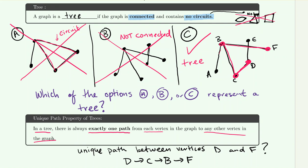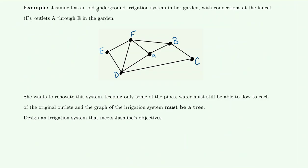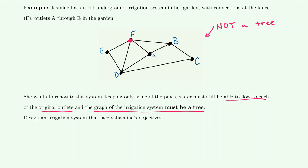In this example, Jasmine has an old underground irrigation system in her garden, with connections at the faucet F and outlets A through E. She wants to renovate the system, keeping only some pipes, so water can still flow to each outlet and the graph of the irrigation system must be a tree. The current system is not a tree: it is connected, but it has many circuits — many loops between vertices — so any circuit at all disallows it from being a tree.